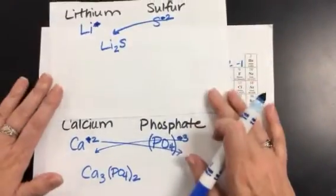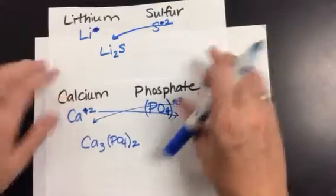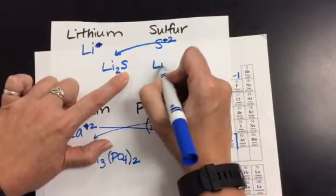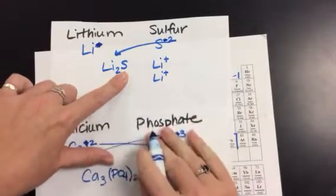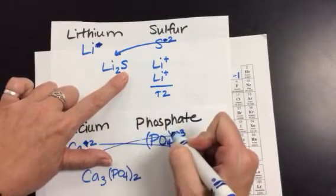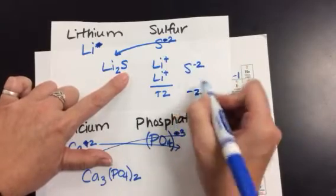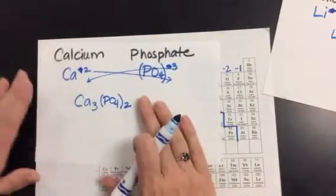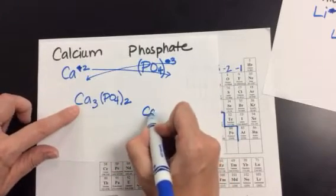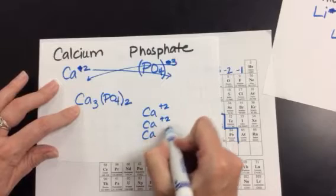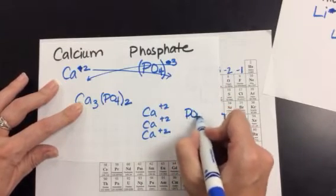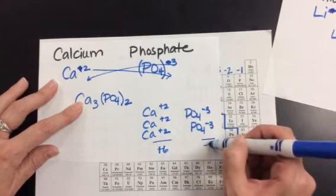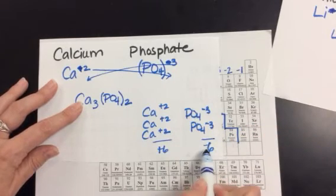Now what both of these are actually doing is canceling out your charges. With lithium and sulfur, it took 2 lithiums to cancel out my 1 sulfur charge, because each lithium has a positive 1 charge, giving a total of positive 2, and sulfur has a negative 2 charge — so positive 2 and negative 2 cancel out. The same thing happens with calcium and phosphate: 3 calciums each have a positive 2 charge, giving plus 6; phosphate PO4 negative 3 with 2 of them gives negative 6 — so those cancel out.